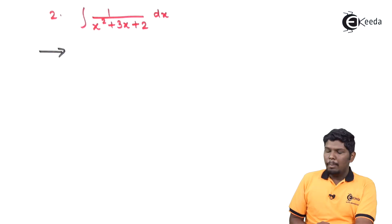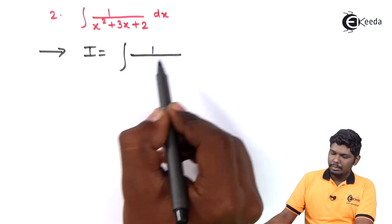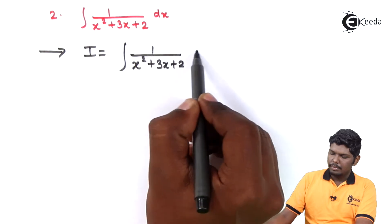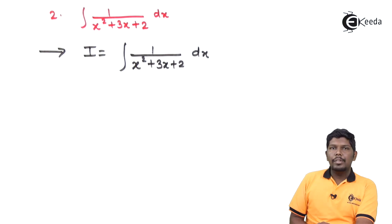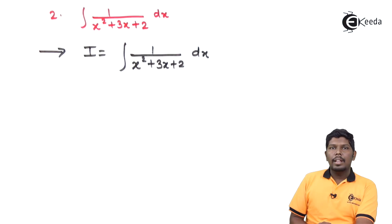Integral 1 upon x² plus 3x plus 2 dx. Here also we have the type 1 upon quadratic. The first step that we are going to check is that the coefficient of x² should be 1. As you can see it is already 1. In the next step we are going to find the third term.